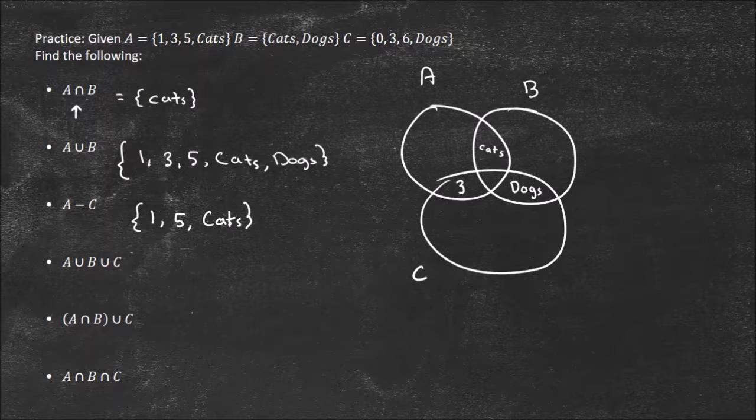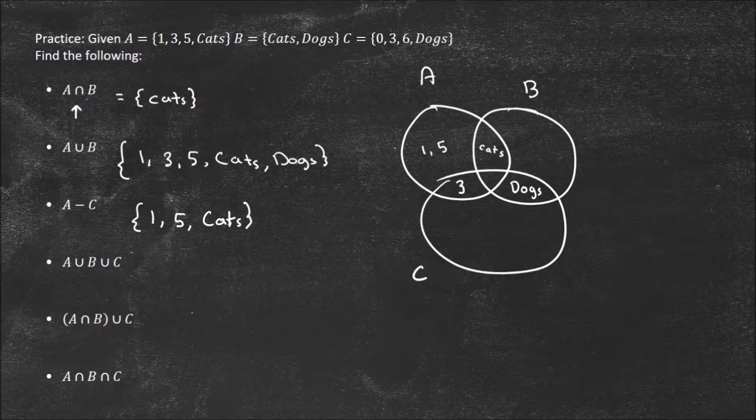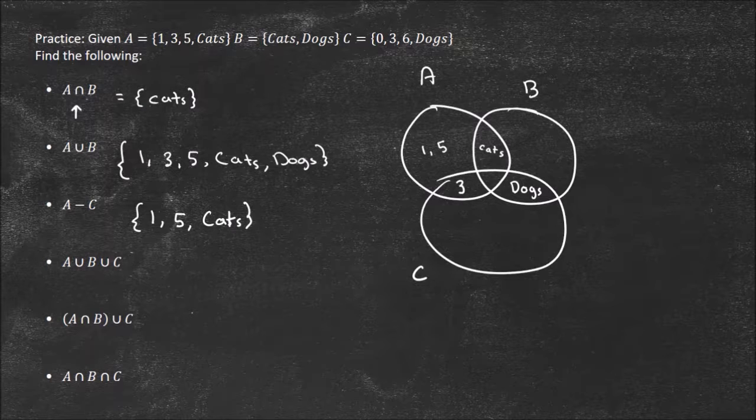Okay, and then now I just fill out my chart. So what else is inside of A that I haven't written already? Well, just 1 and 5. Those are unique to A. What is unique to B? Nothing. We've already accounted for everything. So there's nothing that's just inside of B. Then what's unique to C? That 0 and the 6, right? So now we have this Venn diagram. And this really makes these problems a breeze.